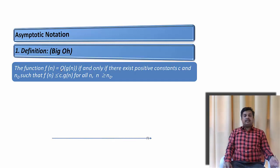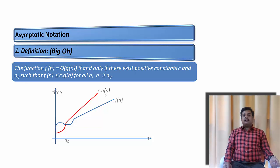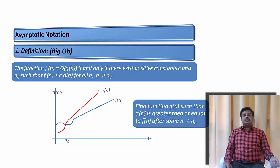Let us look at a graph to understand this. x is the number of inputs and y is the time taken. This is the function f and this is the function c·g(n). After a certain point n0, all the values of c·g(n) are greater than or equal to f. In this condition we say g is Big O of f, so f equals Big O of g. We are trying to find a function g such that it is greater than or equal to f for some n greater than or equal to n0.